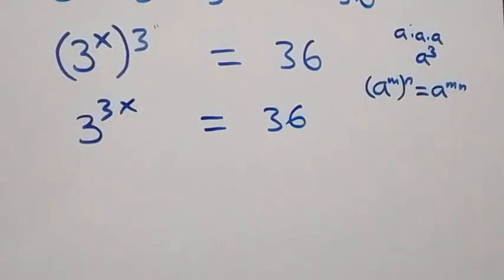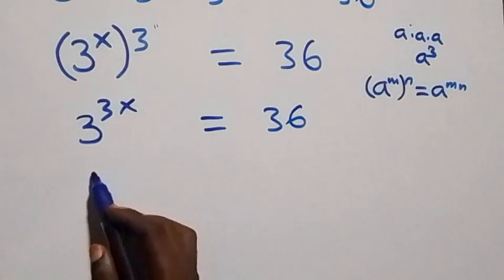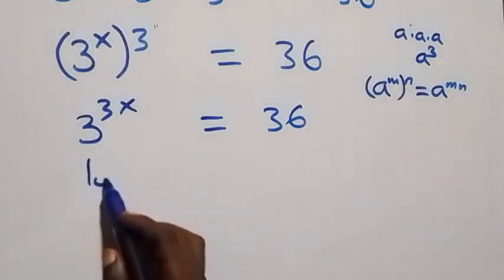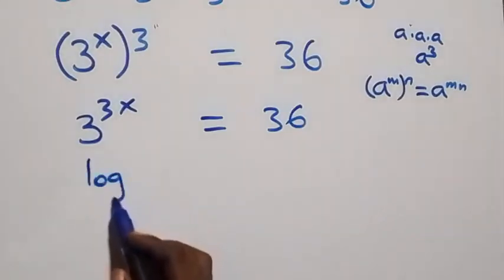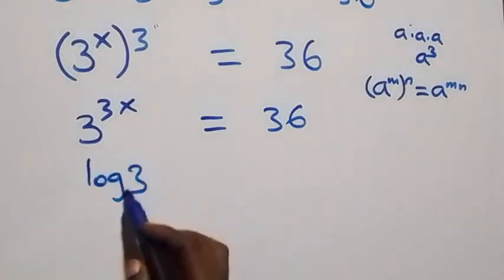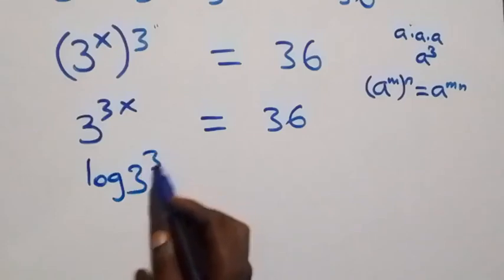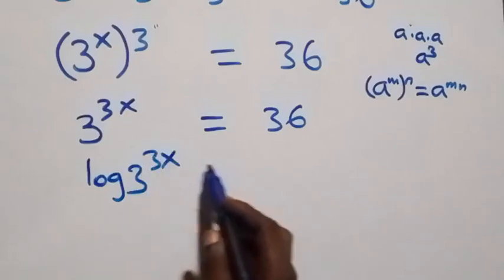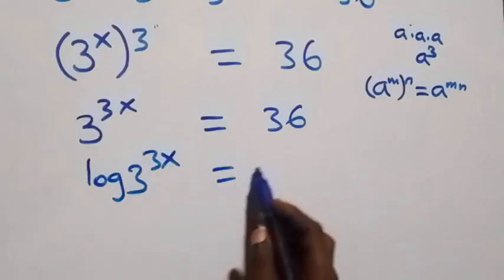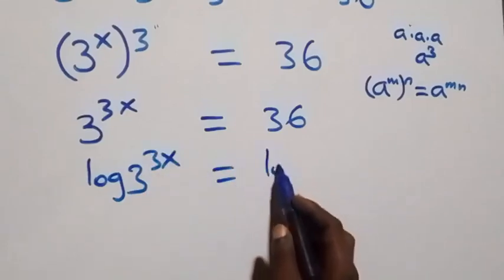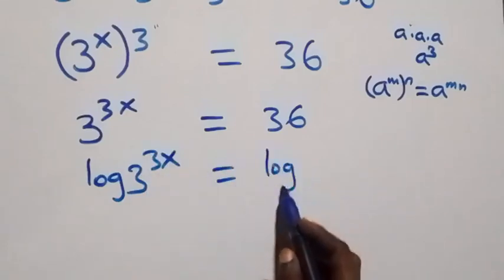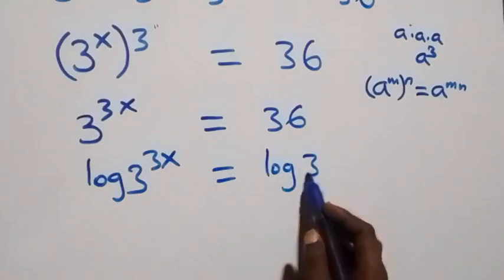In the next step, we take the log on both sides. We have log of 3 raised to power 3x equals log of 36.